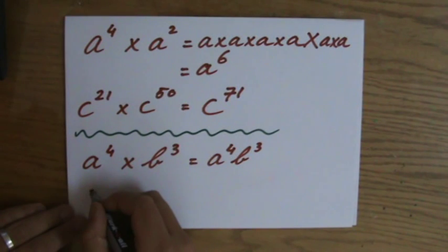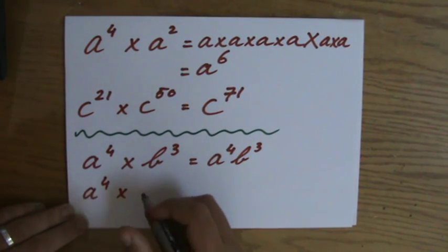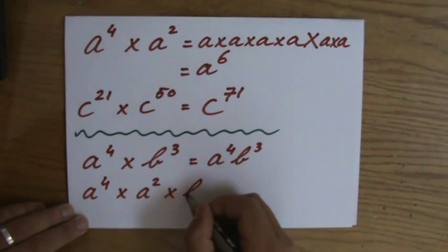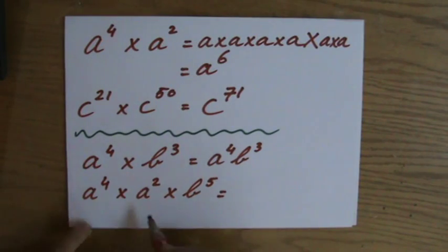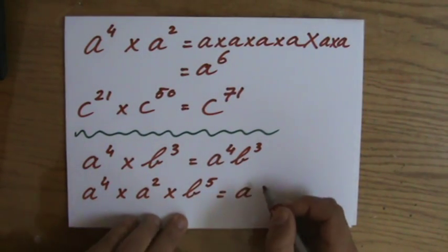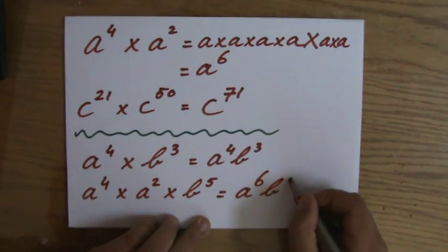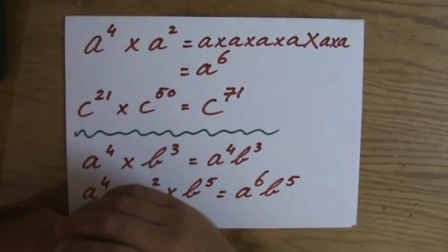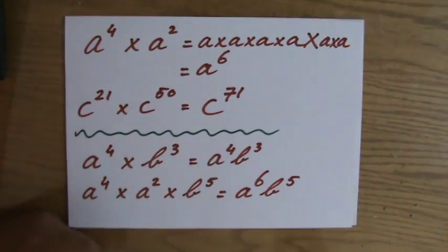If I have a to the power 4 times a to the power 2 times b to the power 5, the answer would be a to the power 6, b to the power 5. Let's go to the next video where I'll give you some example questions applying the first law of the indices. See you there.